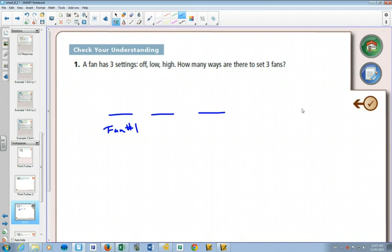The second fan, fan number two, also has three choices, and fan number three has three choices. If each decision has three choices, there's going to be 3 × 3 × 3 = 27 different ways in total.